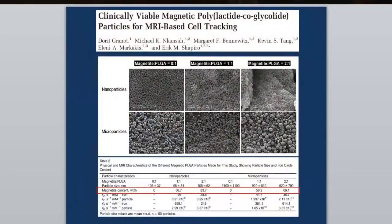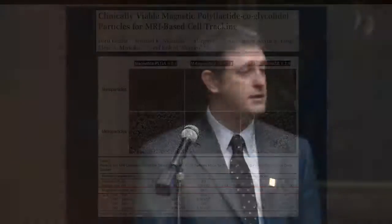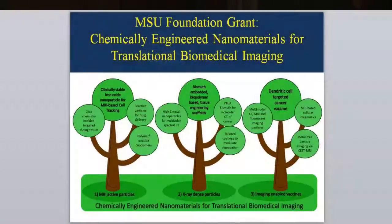Our laboratory has pioneered the development of clinically viable bio-nanomaterials using simple chemical engineering technologies. We can make magnetic nanoparticles about 100 nanometers in diameter, and magnetic microparticles that are a micron in diameter. As part of an MSU Foundation grant we recently received, we've established a program of chemically engineered nanomaterials for translational biomedical imaging — developing nanomaterials for MRI, x-ray-dense nanomaterials for serial CT imaging, and imaging-enabled vaccines as new platforms for designing cancer vaccines.